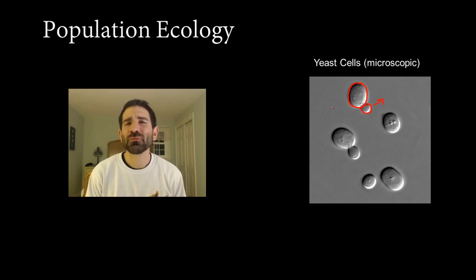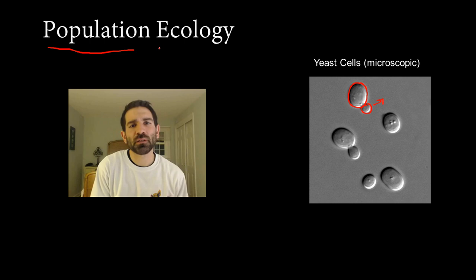They reproduce very quickly, and that's good for us because when added to dough, they will eat the sugars, reproduce, and produce lots of carbon dioxide that helps the dough rise. They are also useful in population studies or population ecology because they can be controlled in a laboratory, so we can control their environment or their ecosystem, and we can see how their numbers grow or shrink over time.